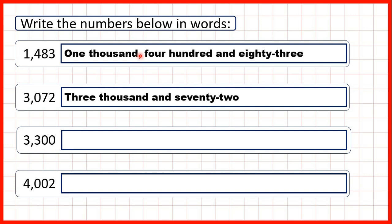Notice that for this first number, we wrote a comma after the word 'thousand', but for this question we didn't write a comma — instead we wrote the word 'and'. When we write a number in words, the comma separates the thousands and the hundreds. But for this number, we didn't have any hundreds — we had a zero as our hundreds digit. So rather than a comma after the word 'thousand', we just wrote 'and' and then the rest of our number.